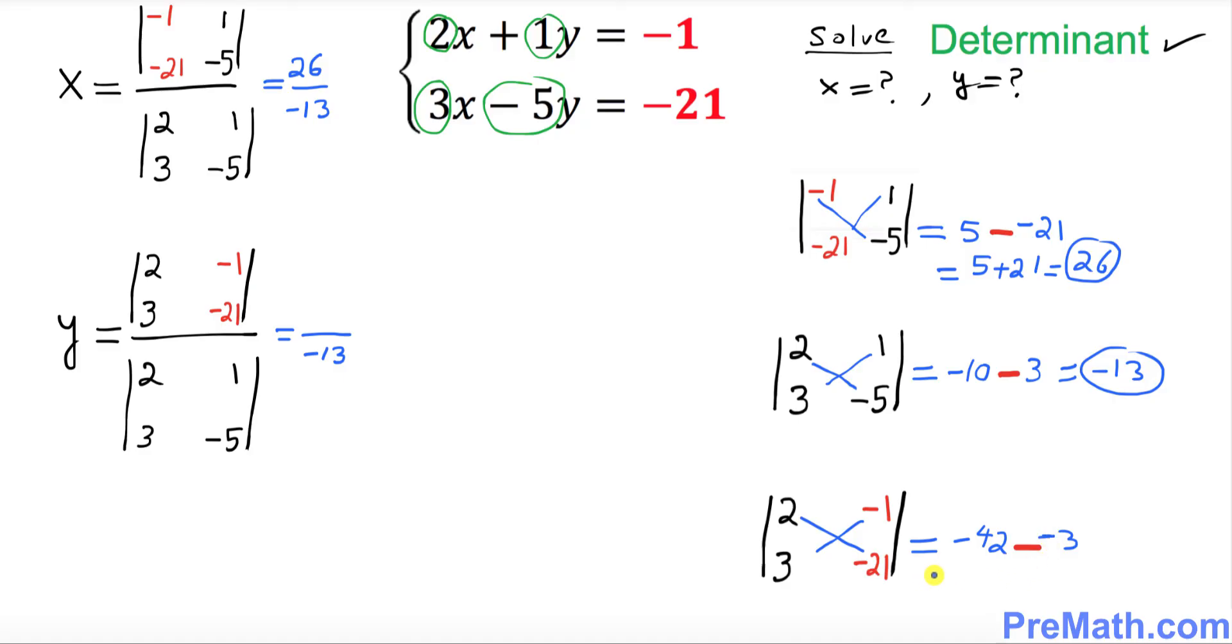So let's simplify that one. So negative 42 - negative and negative they're next to each other become positive plus 3. If you simplify that becomes negative 39. So the value of this one turns out to be negative 39.